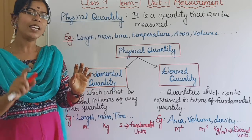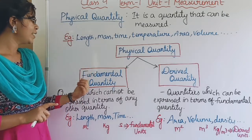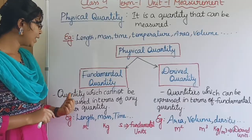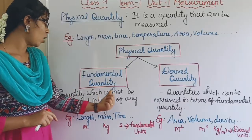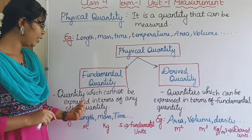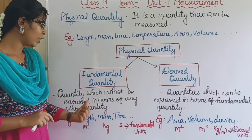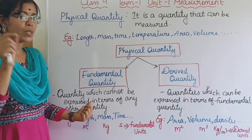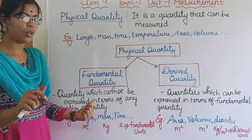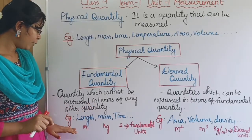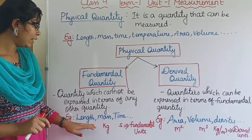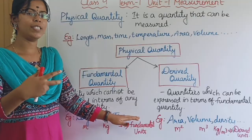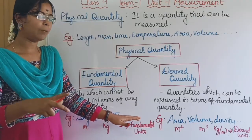This is the fundamental quantity. It is a quantity which cannot be expressed in terms of any other quantity. The fundamental quantity is the base quantity. For example: length, mass, time, temperature, amount of substance, luminous intensity.